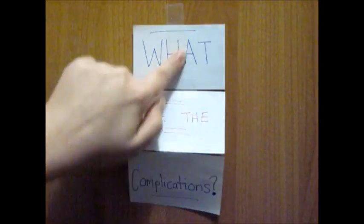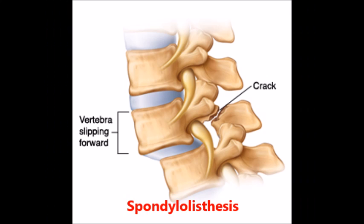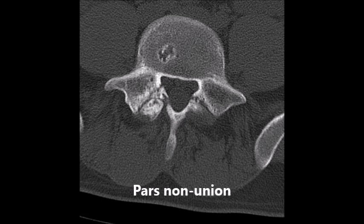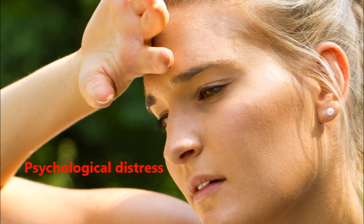And lastly, what are the complications of spondylolysis? As mentioned earlier, spondylolisthesis can be a complication of spondylolysis. Other complications are a pars non-union, or a fracture that doesn't heal, postural changes due to pain which can predispose someone to further injury, and psychological distress.